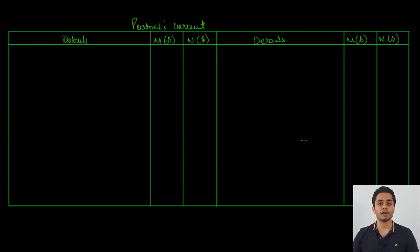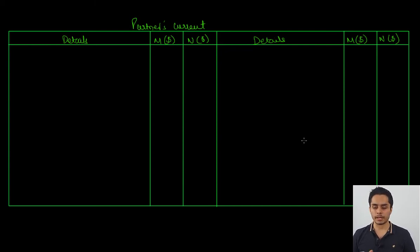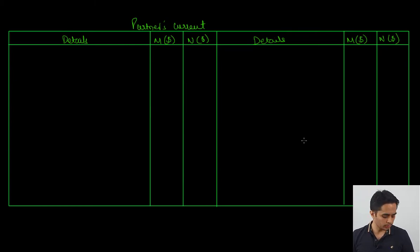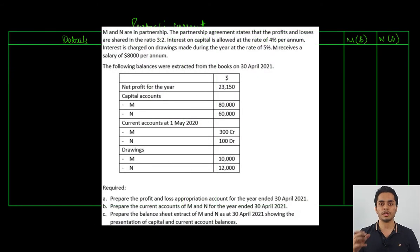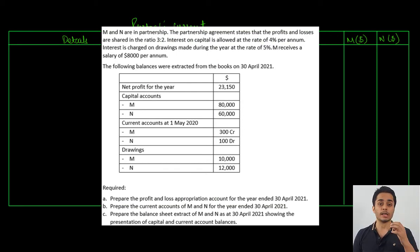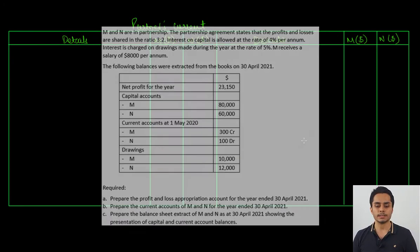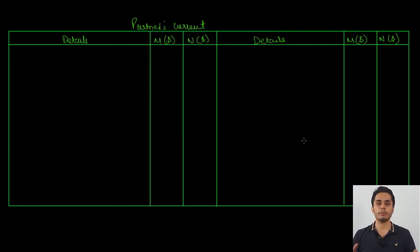The current account will begin with the balances brought down. As per the question, M holds a 300 credit balance in the current account, while N has a 100 debit balance. We bring down these balances on the relevant sides first.